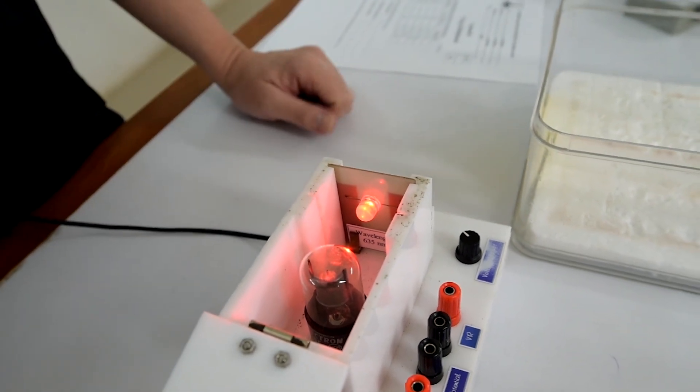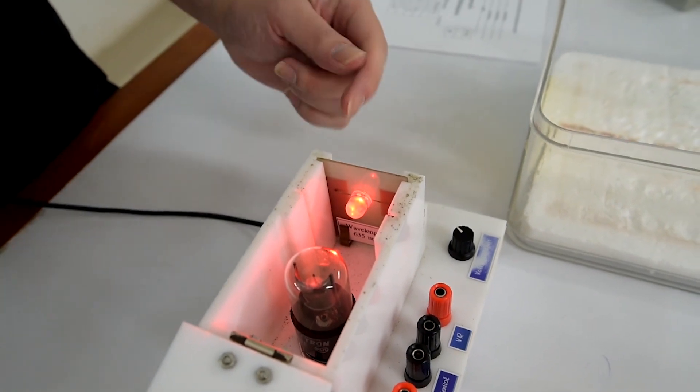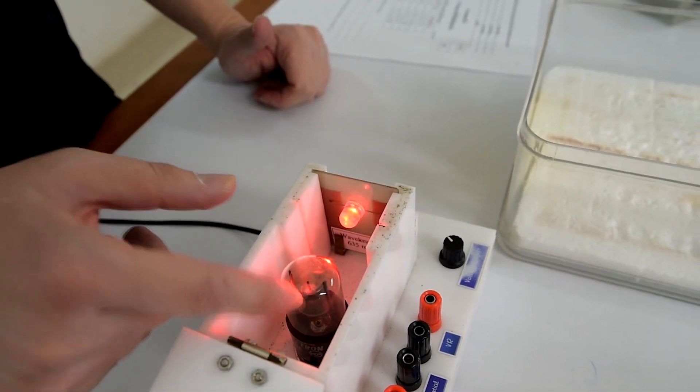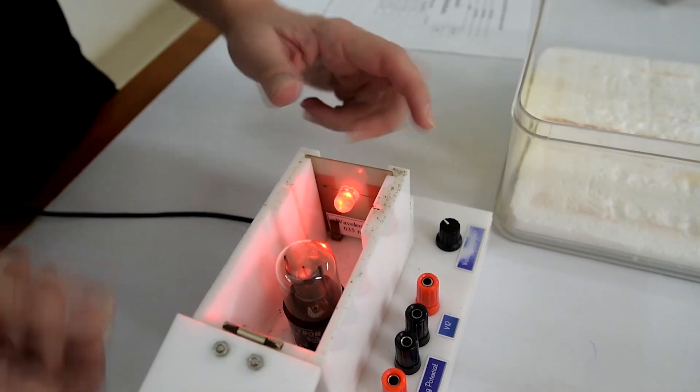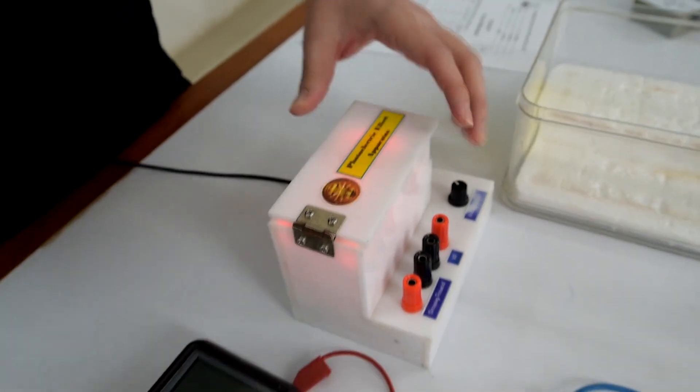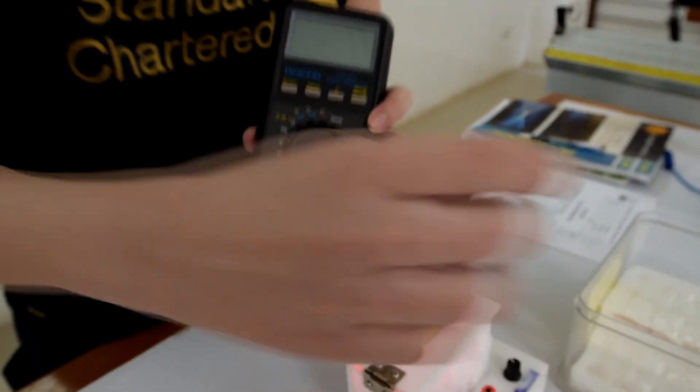Here the photoelectric effect already occurs. The light illuminates onto the metal surface. The photoelectrons cause the photocurrent in the circuit. Then we will measure the stopping potential and VR.